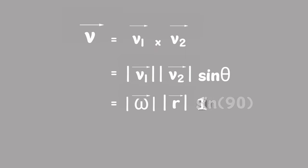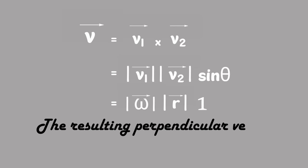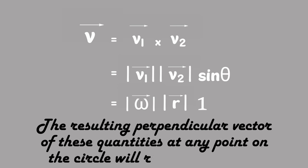And as the sine of 90 is 1, the resulting perpendicular vector of these quantities at any point on the circle will remain the same.